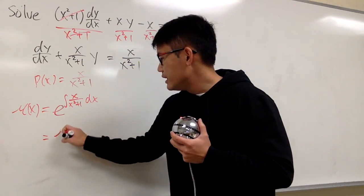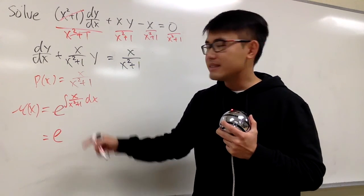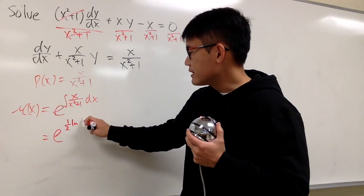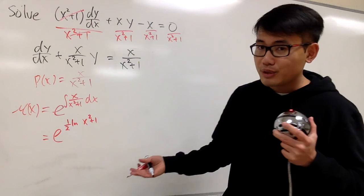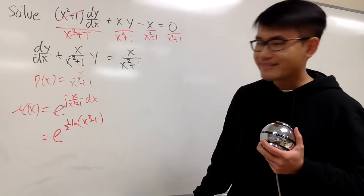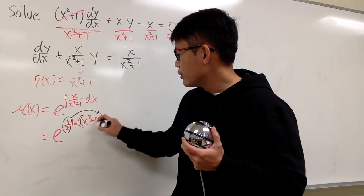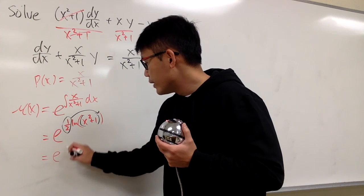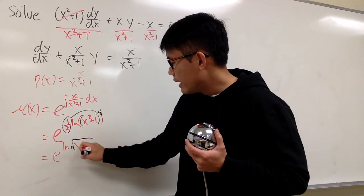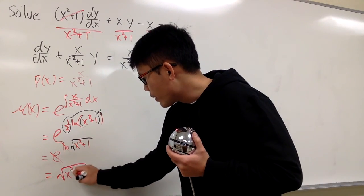The derivative of x squared plus 1 is 2x, so the x's cancel and we divide by an extra 2, giving us 1 half ln of x squared plus 1. No absolute value is needed since x squared plus 1 is always positive. We bring the 1 half up as a power, so we have e raised to ln of the square root of x squared plus 1. The e and ln cancel, and the integrating factor is simply the square root of x squared plus 1.